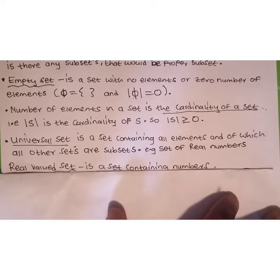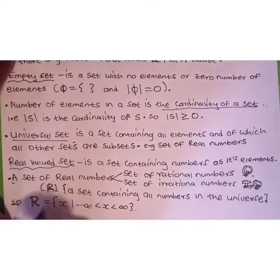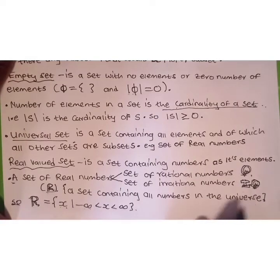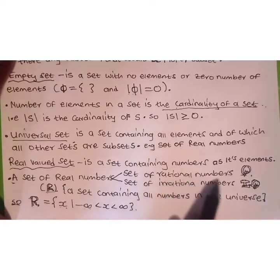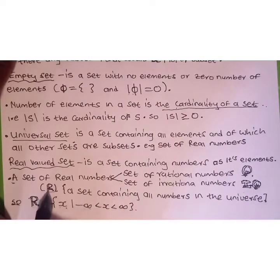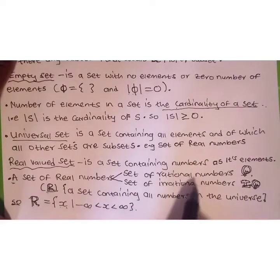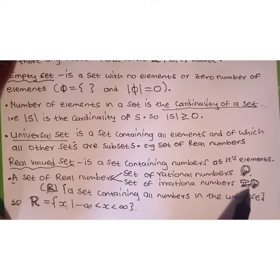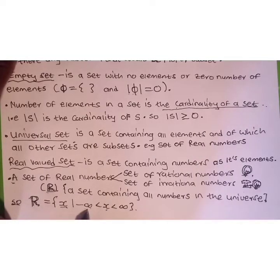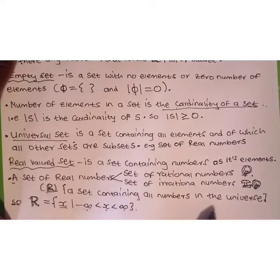A real value set is a set containing numbers as its elements. The set of real numbers is a set containing all numbers in the universe, and it is divided into the set of rational numbers. The set of real numbers is denoted by ℝ, the set of rational numbers by Q, and the set of irrationals by IQ. The set of real numbers is given by x such that x ranges from negative infinity to positive infinity, where x represents all numbers in the universe.